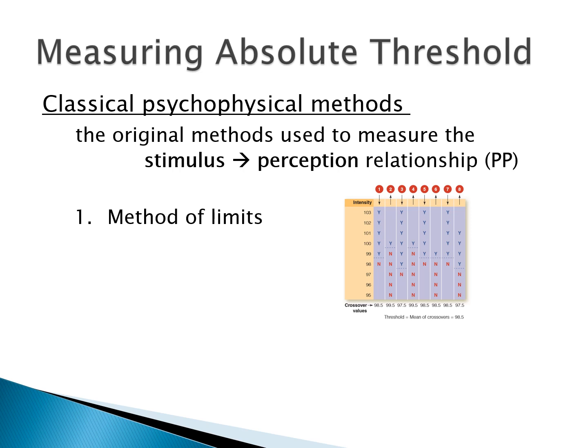Then we start down where you can't hear it — say at 94 — and go: 95 no, 96 no, 97 no, 98 no, 99 yes, I heard that. So between 98 and 99 is where you change from no to yes, giving a crossover value of 98.5. Sometimes they start up where you can hear it and systematically lower the intensity until you say no; sometimes they start down where you cannot hear it and systematically ascend until you can hear it. We do that several times, take those crossover values, and average them. That's the method of limits.